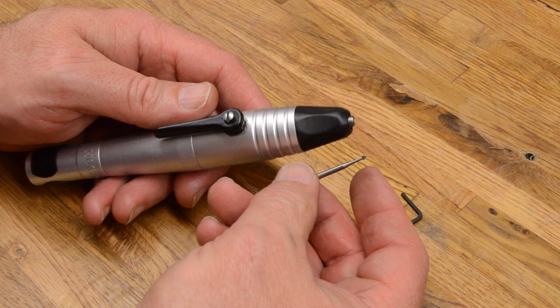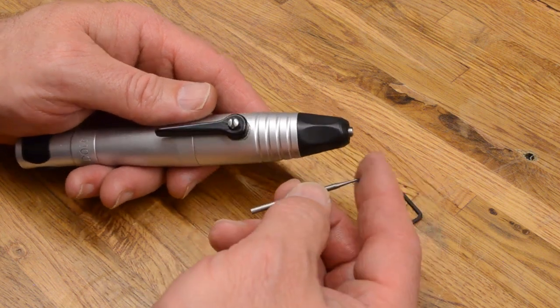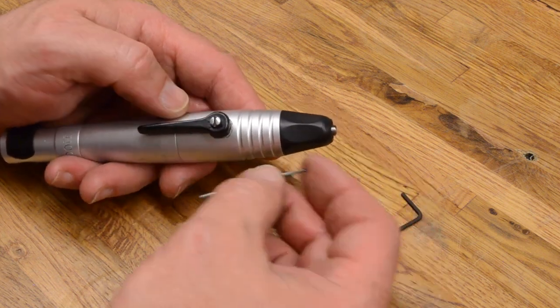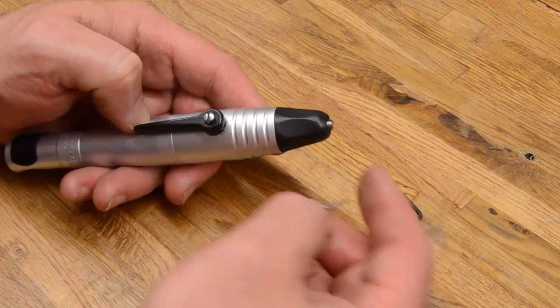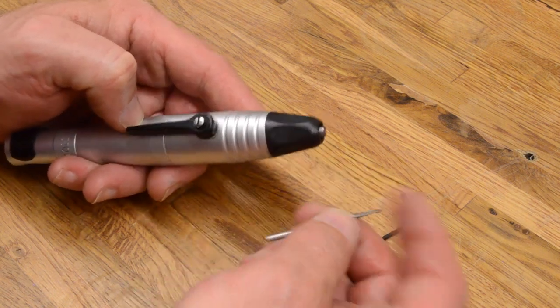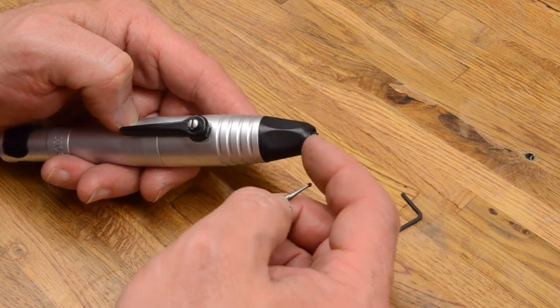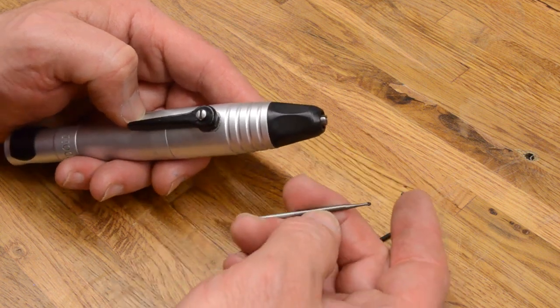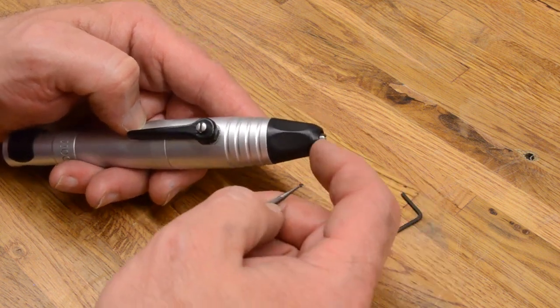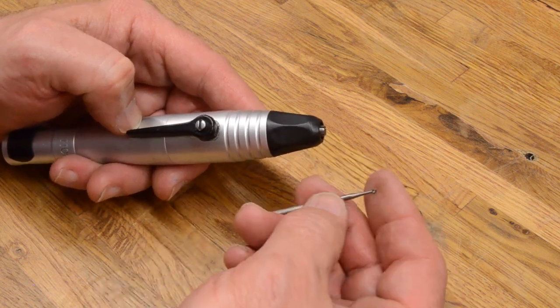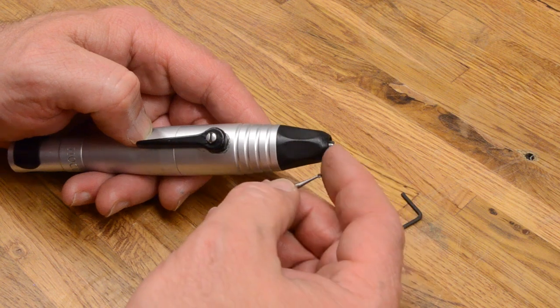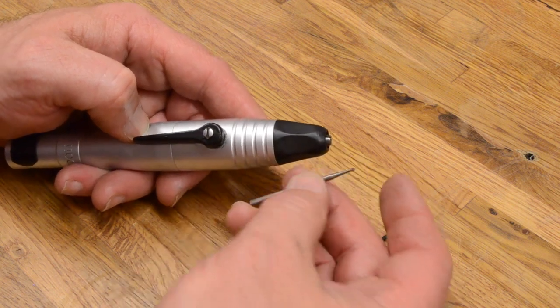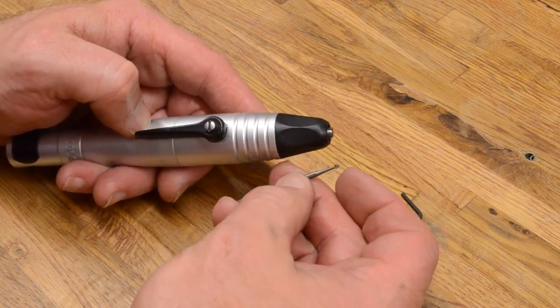Now, there's a couple things that can cause this. Over time, just use. The act of inserting and removing burrs will wear the inside of the collet. It's steel against steel, and the steel of the burrs are typically harder than the steel of the collet. So just over time and use can cause a collet to start to wear enough that it's not going to hold your burr securely.